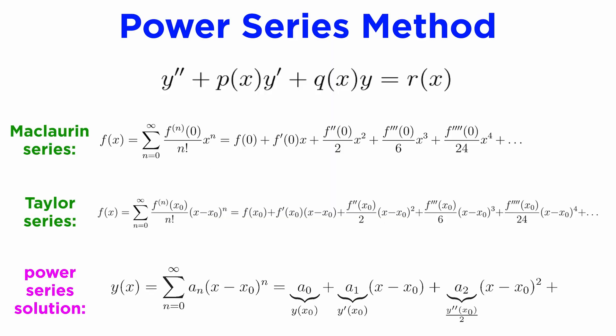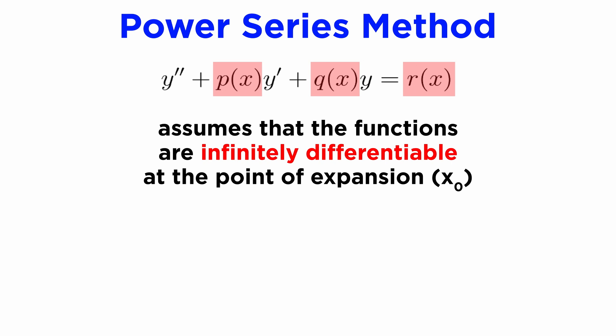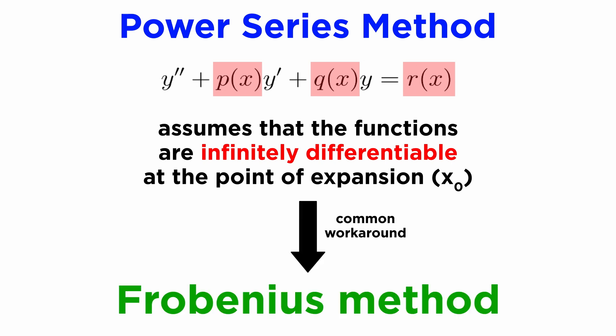We just learned how to find power series solutions to linear differential equations of the form y'' + p(x)y' + q(x)y = r(x), and we saw that it's quite a powerful technique. However, one limitation of the method is that it assumes that the functions p, q, and r are all infinitely differentiable at the point we are expanding about, which we denoted x₀. This is not always the case, and a common workaround is to modify the previous method into something called the Frobenius method.